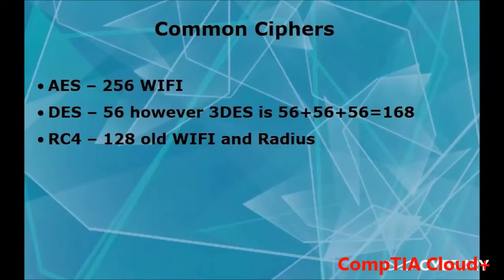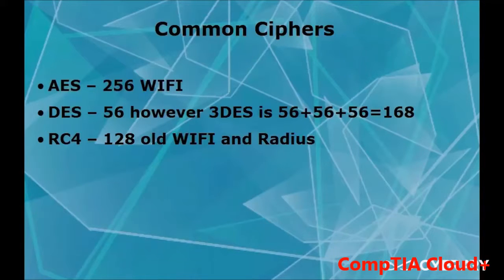The common ciphers are AES, DES, and RC4. AES is the leading encryption standard, mainly offered with Wi-Fi, and uses 256-bit encryption. There are three types of Wi-Fi: WEP, WPA, and WPA2. AES is the encryption used with WPA2, though it can be used with WPA as well.